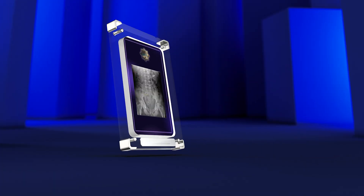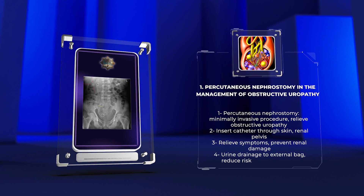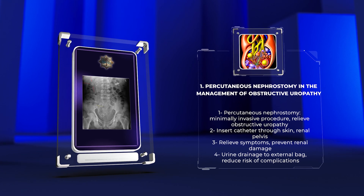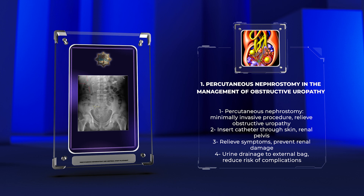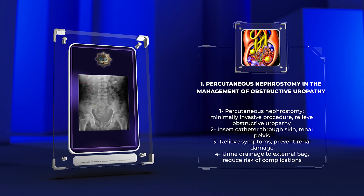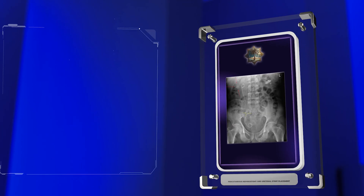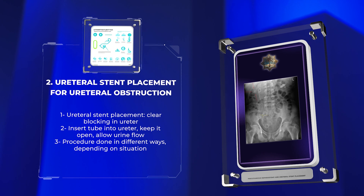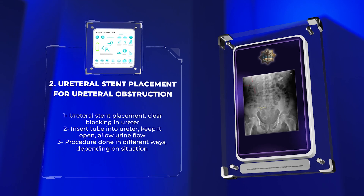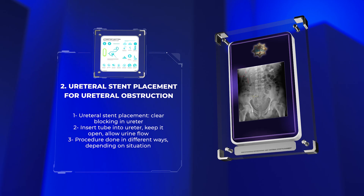Percutaneous nephrostomy is a minimally invasive procedure to relieve obstructive uropathy by inserting a catheter through the skin and into the renal pelvis. It helps relieve symptoms, prevent renal damage, and allows urine drainage to an external bag, reducing the risk of complications. Ureteral stent placement is a procedure used to clear blockings in the ureter. It involves inserting a tube into the ureter to keep it open and allow urine to flow. The procedure can be done in different ways, depending on the situation.